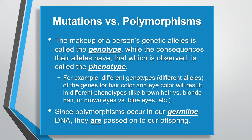The genetic differences polymorphisms cause create different alleles — versions of the same gene — which is called the genotype, that we can observe in a given population, which is called the phenotype. For example, different genotypes or different alleles of the genes for hair color and eye color will result in different phenotypes: brown hair versus blonde hair, brown eyes versus blue eyes, etc. Since polymorphisms occur within our germline DNA, they are passed on to our offspring, which is an example of heritability.